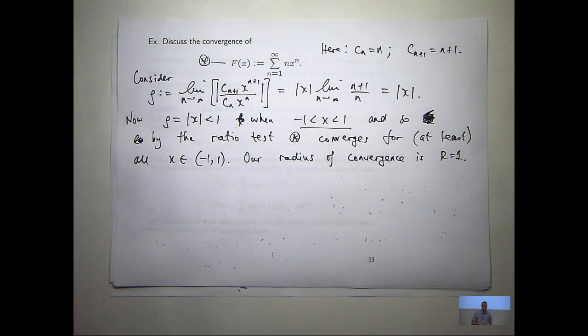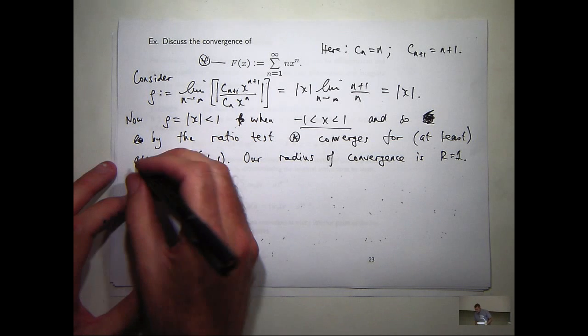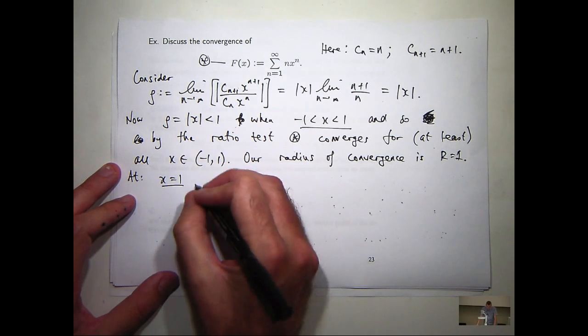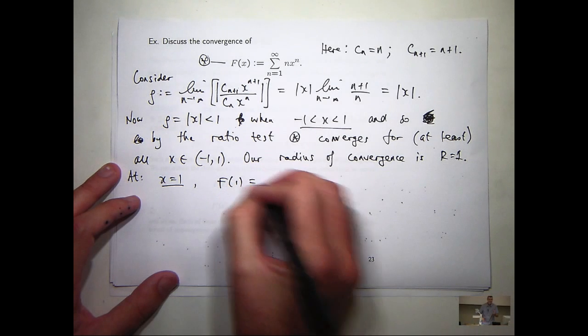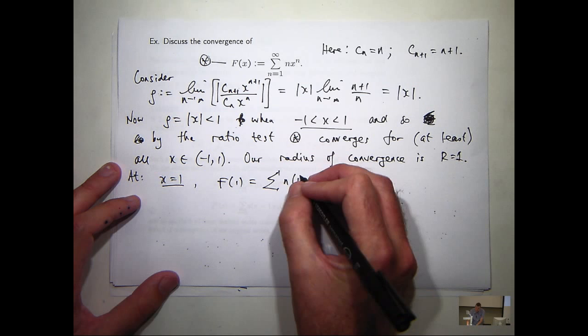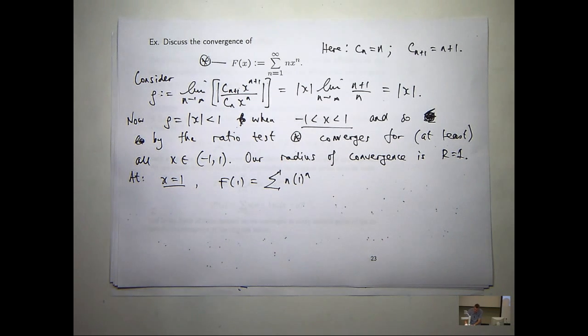So the last thing we've got to do is test our endpoints. What happens at x equals 1, x equals minus 1? So I plug in at x equals 1 there and I get this. Now, who can tell me does that series converge or diverge? It diverges. Why?